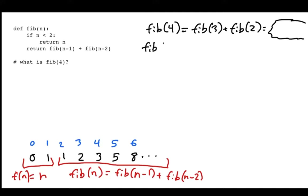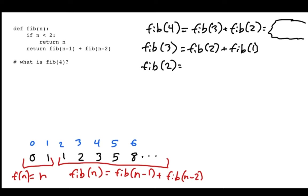So I have two new problems: Fibonacci of 3 and Fibonacci of 2. I'll start with Fibonacci of 3. Coming through the code, I haven't hit my base case yet. So Fibonacci of 3 is going to be Fibonacci of 2 plus Fibonacci of 1. That depends on Fibonacci of 2, which I already have on the board, plus this new problem: Fibonacci of 1.